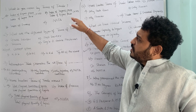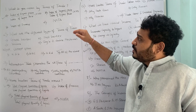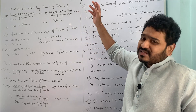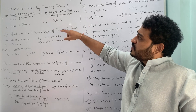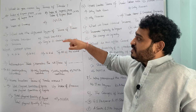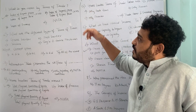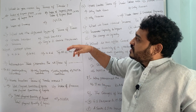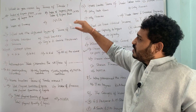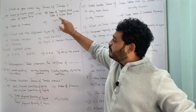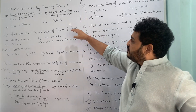The first MCQ is: what do you mean by terms of trade? The question can be framed in many ways — what do you mean by terms of trade, or what is the formula for terms of trade. The options are: (A) index of export price divided by index of import price multiplied by 100; (B) index of import price divided by index of export price multiplied by 100; (C) index of finance; (D) none of the above. The correct answer is option A — index of export price divided by index of import price multiplied by 100.